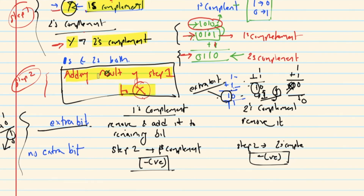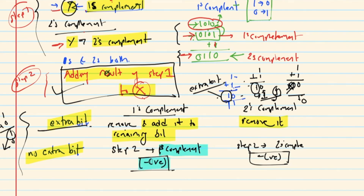Adding the result of step 1 to x: if x minus y uses one's complement, add the result of step 1 to x. If there is no extra bit, the result of step 2 is in one's complement form and represents a negative value. If there is no extra bit in two's complement, the result is also the negative sign.